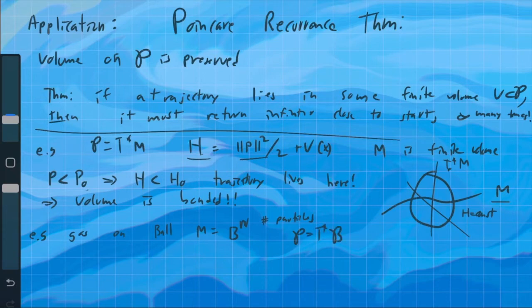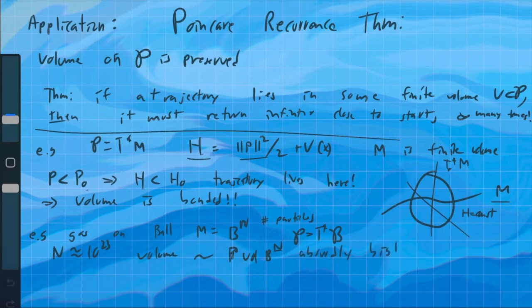And then our phase space is the cotangent bundle of the ball. The trajectory of a gas, the configuration of the gas, will always be in some finite volume region. Keep in mind that n is on the order of like 10 to the 23rd. That's how many particles there are. So the volume is like the volume of B, the volume of your ball to the n power, which is absurdly big. But still finite.